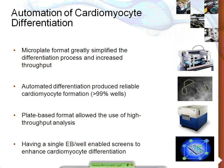Shape factor takes the shortest radius of a circle and divides it by the longest radius, so a perfect circle has a shape factor of one. Our manually done hanging drops had a shape factor of 0.5 compared to our automated microplate format, which had a shape factor of 0.8 — a very significant improvement in circularity. The microplate format greatly simplifies the differentiation process and increases throughput. We were also able to show that this automated differentiation process produced reliable cardiomyocytes, with beating regions in over 99% of wells.